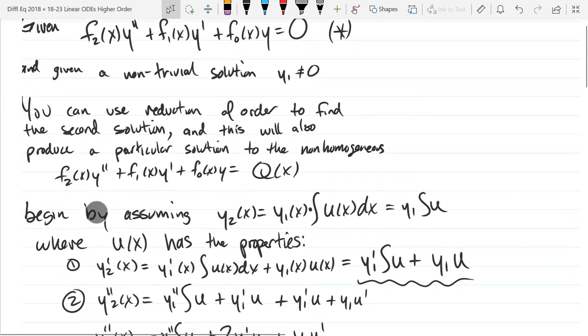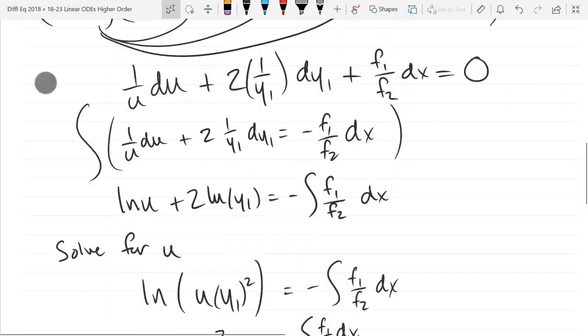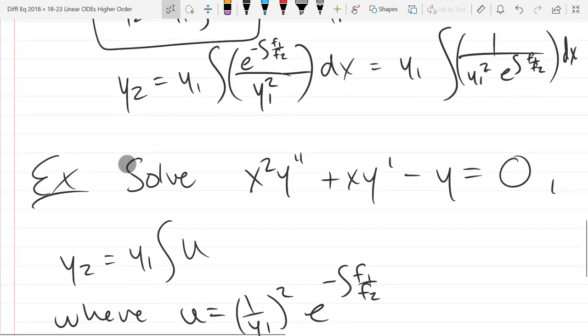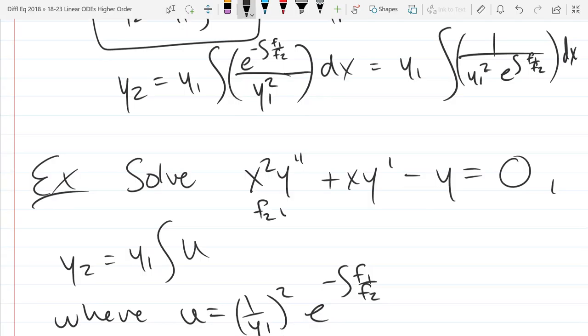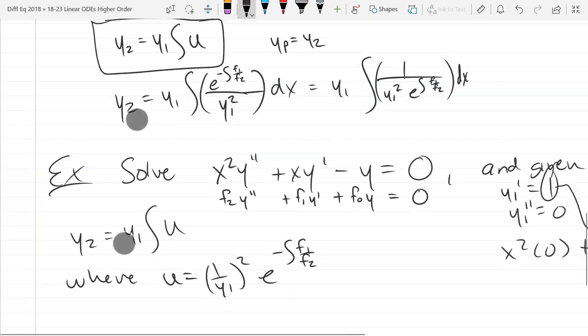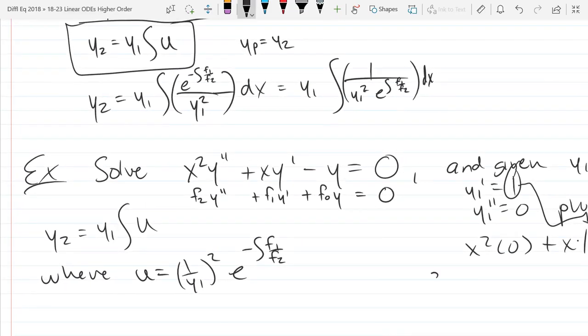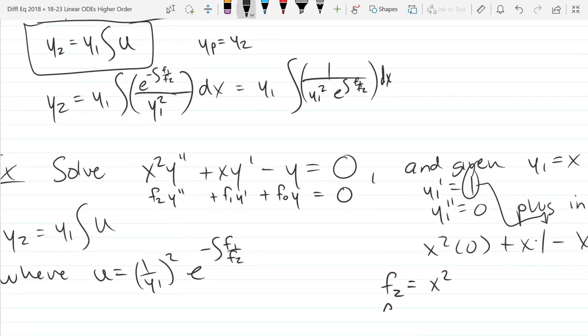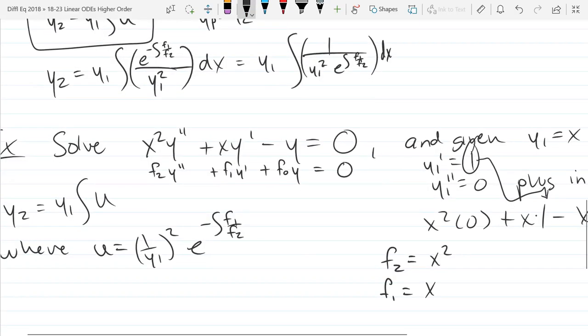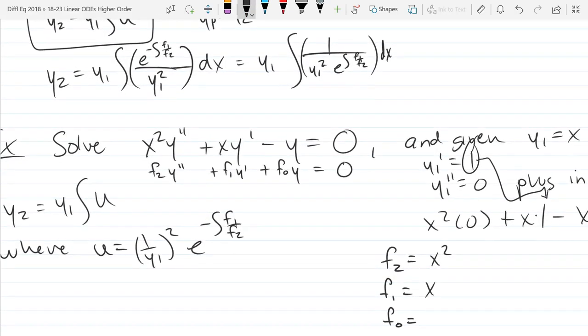f2 y double prime plus f1 y prime plus f0 y equals 0. What is our f2? X squared. What is f1? X. What is f0? Negative 1.